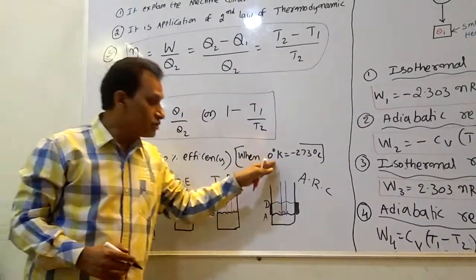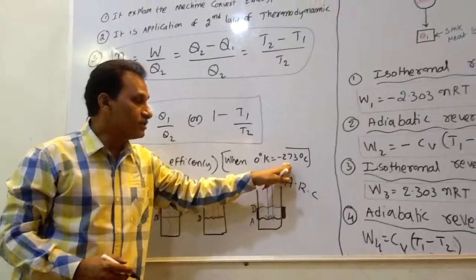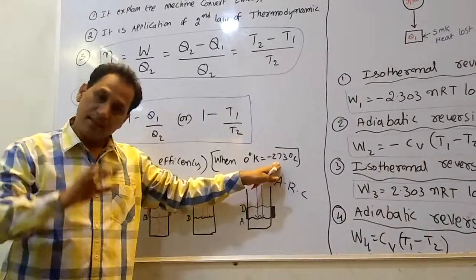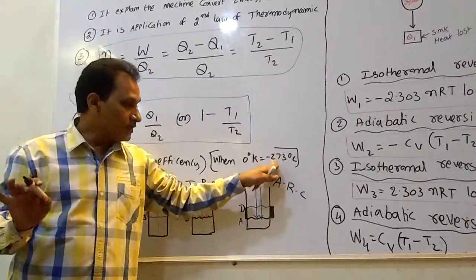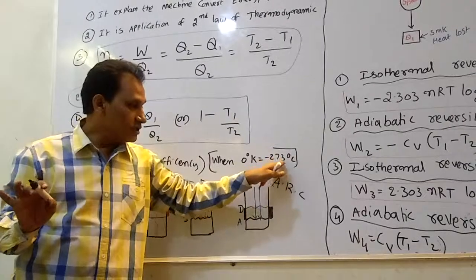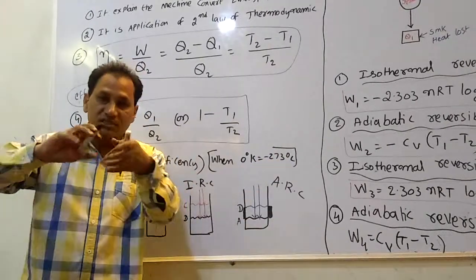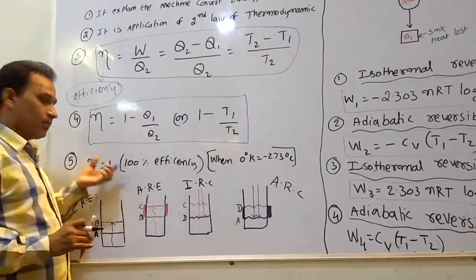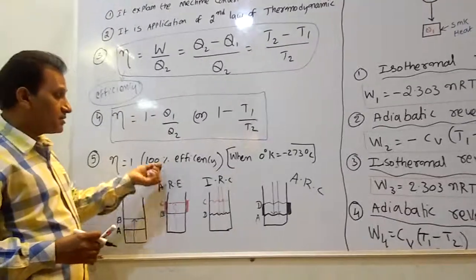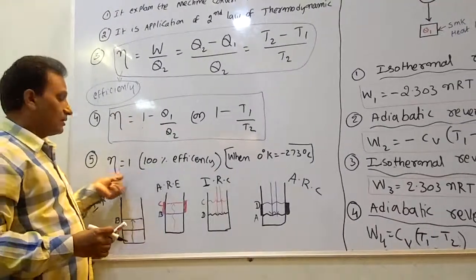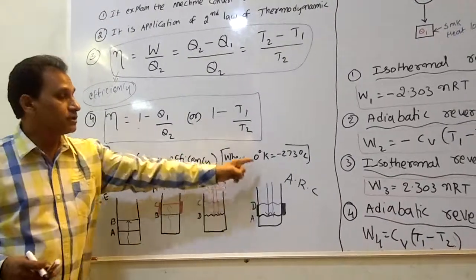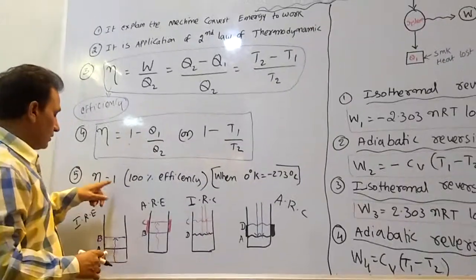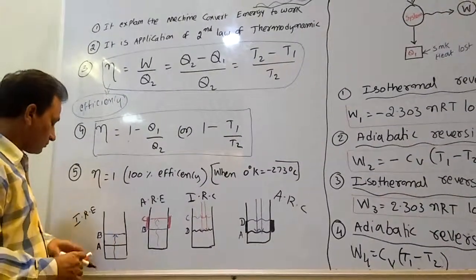If the engine could perform 100% efficiency, when nu equals 1, then the temperature would be 0 Kelvin, which is minus 273 degrees centigrade. This means it is not possible — at minus 273 degrees centigrade the engine fluid would freeze, so no machine can perform 100% efficiency.